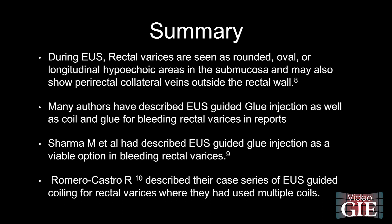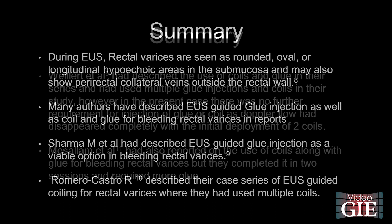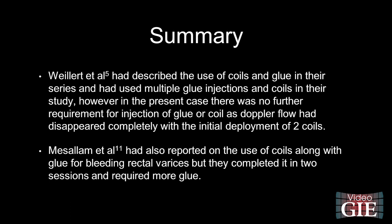For EUS guided coiling of gastric varices, coils are deployed and if Doppler flow is still present, we inject a small quantity of 0.5–1 ml of glue at the same site. During EUS, rectal varices are seen as rounded, oval, or longitudinal hypoechoic areas in the submucosa. Perirectal collateral veins may also be seen outside the rectal wall. Sharma et al. had described EUS guided glue injection as a viable option in bleeding rectal varices. Romero Castro R. described a case series of EUS guided coiling for rectal varices where multiple coils were used. Weylert et al. described the use of coils and glue in their series with multiple glue injections and coils.